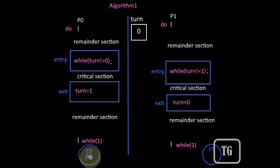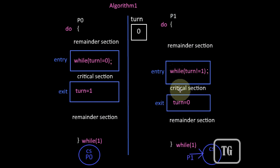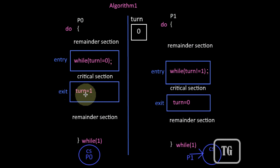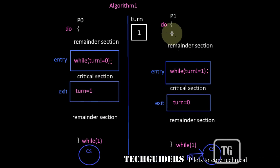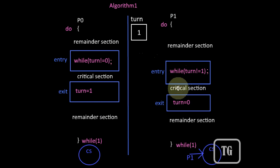While P0 is executing in the critical section, even if P1 wishes to enter the critical section, it will check the value of the turn variable and find that the value is 0, which is not equal to 1, hence P1 will keep on waiting in the while loop without entering the critical section. So only P0 will be inside the critical section. After P0 completes the critical section, in its exit section it will change the value of turn to 1, and P1, which keeps checking the value of turn, will find that the value is now 1, breaks the while loop, and can enter the critical section.